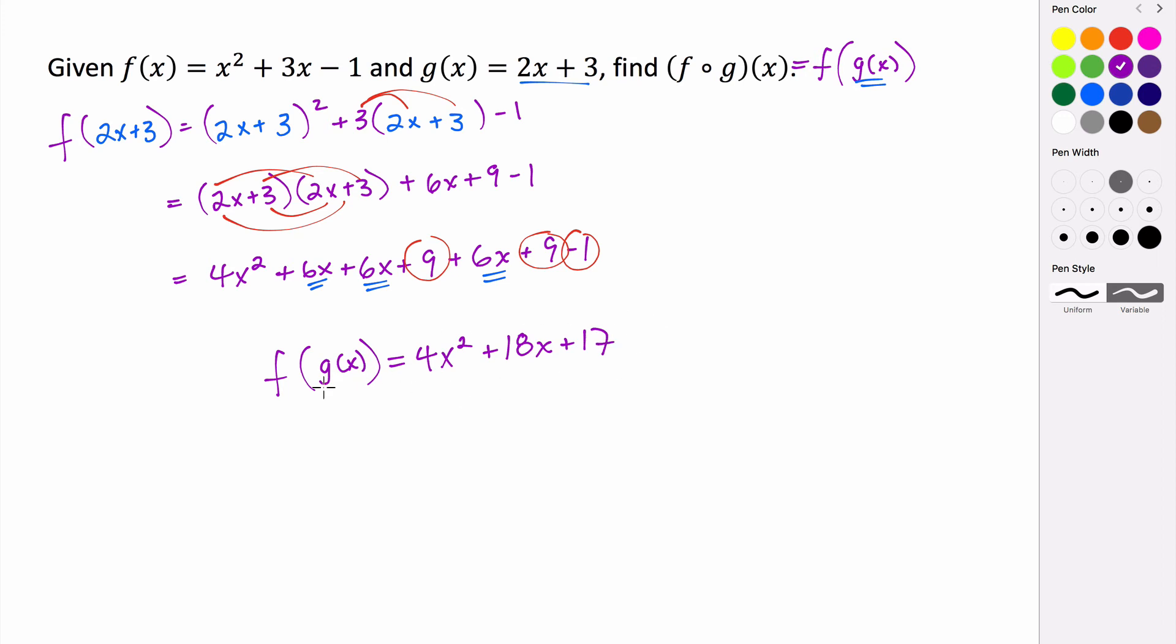So this right here, 4x squared plus 18x plus 17, is our function, our composition of f and g, f of g of x.